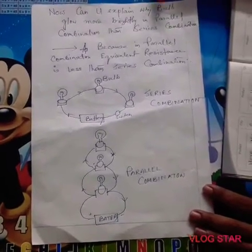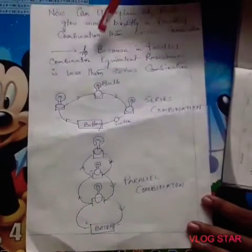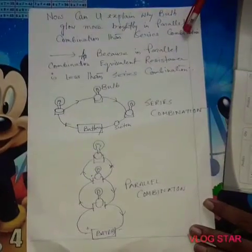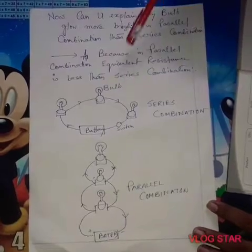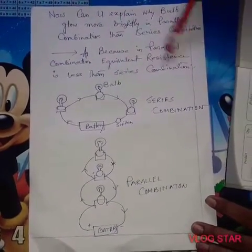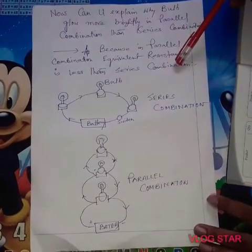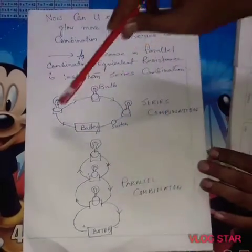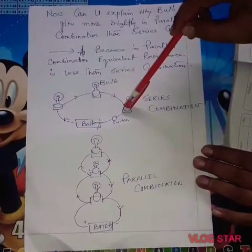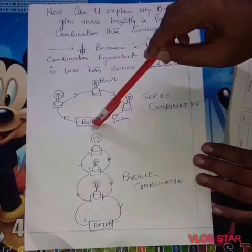Now can you explain why bulbs glow more brightly in parallel combination than series combination? Because in parallel combination, equivalent resistance is less than series combination. Look over here at the picture - three bulbs are in series combination with one battery connected.